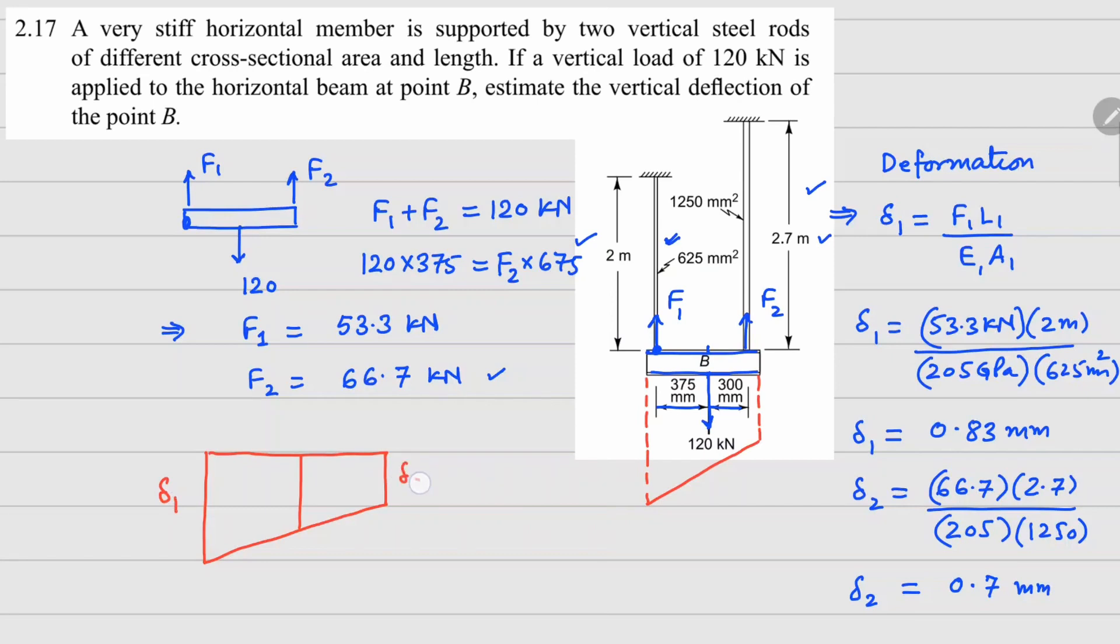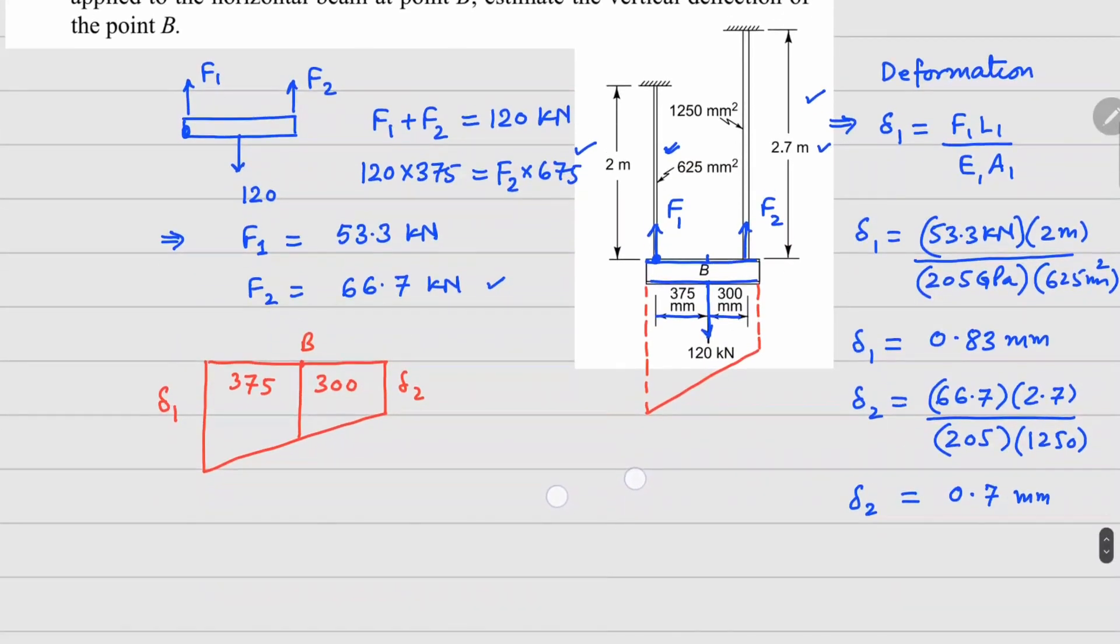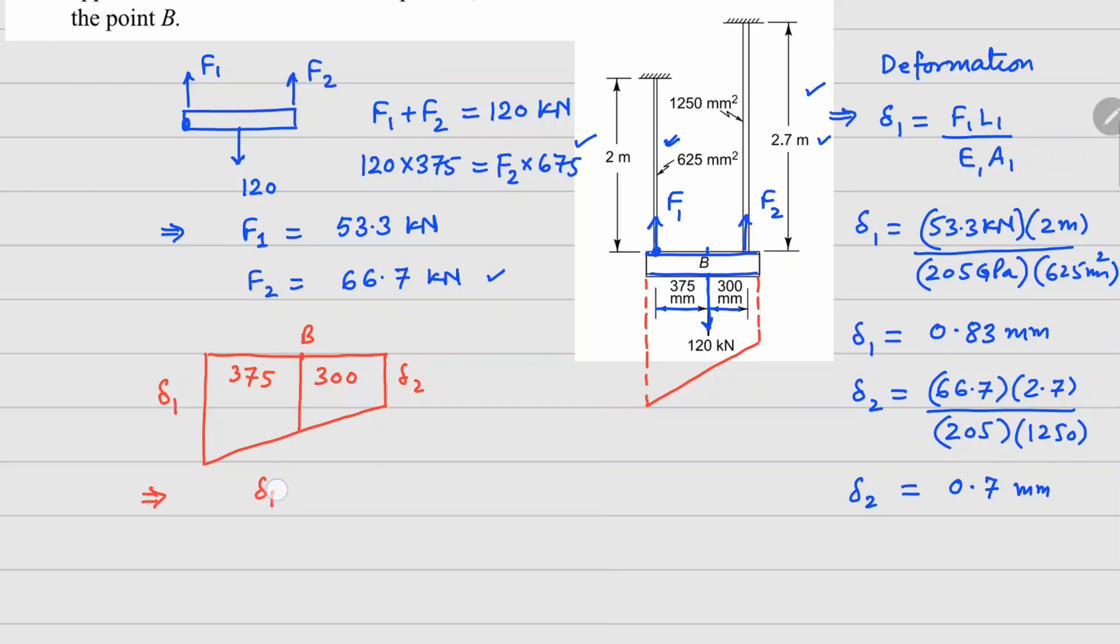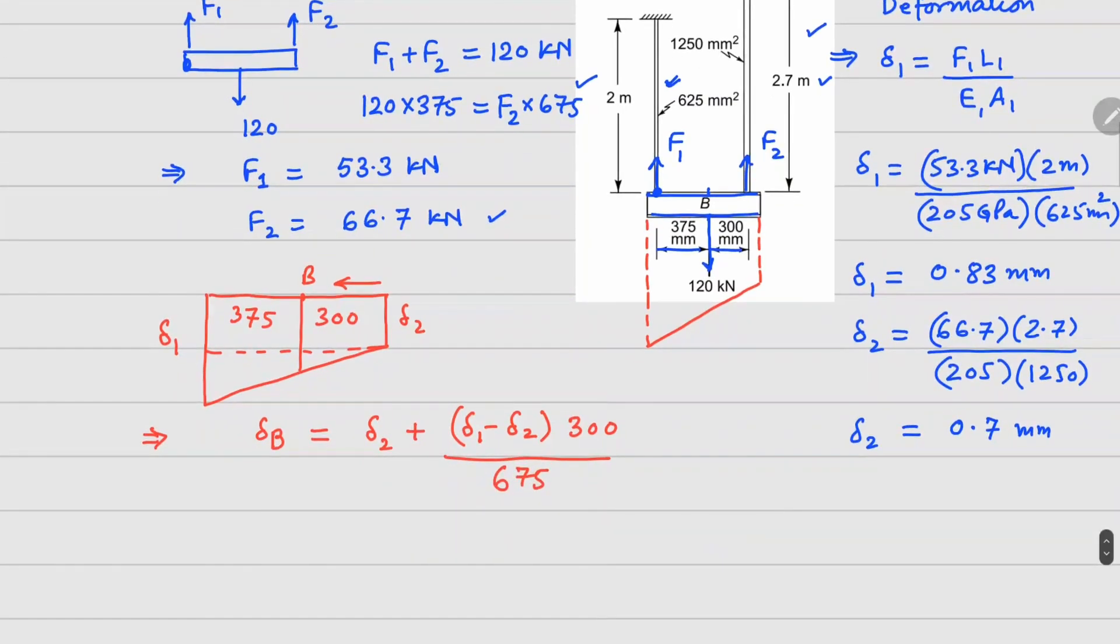This is your delta one, this is your delta two. Let's say this is point B, this is 375, this is 300. So using similar triangles from here we can find out delta B is going to be delta 2 plus delta 1 minus delta 2, that's the difference between these two displacements. And since it is sitting at a distance of 300 mm from this side and the total distance is 675, with this interpolation we can get the value of delta B which is 0.76.